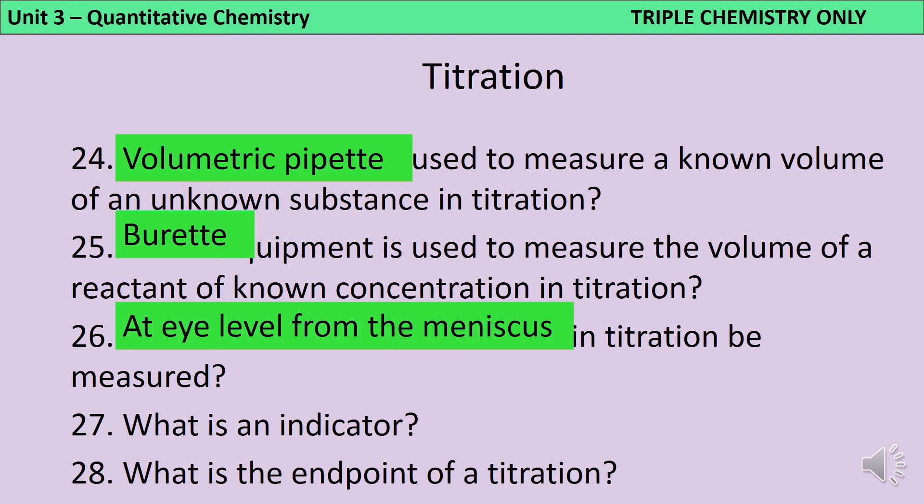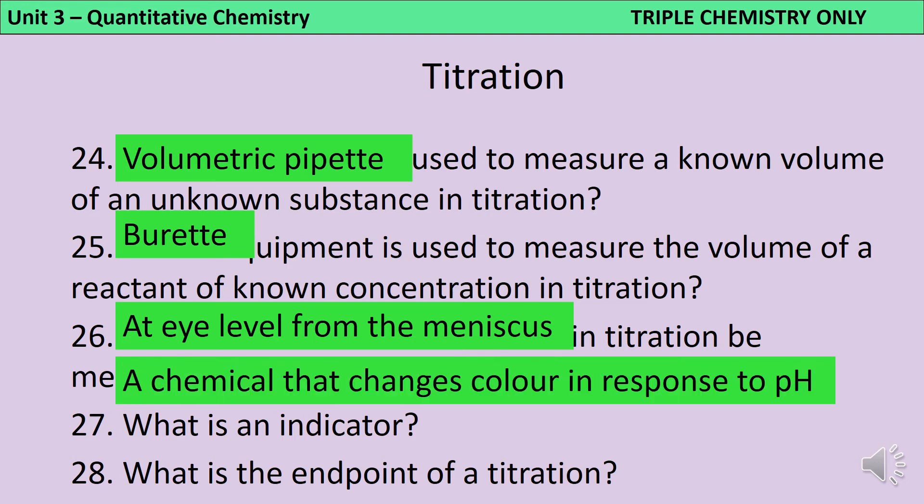An indicator is a chemical that will change colour in response to changes in pH. The end point of the titration is the very first time that that indicator permanently changes colour.